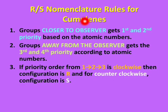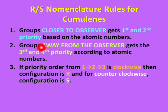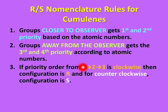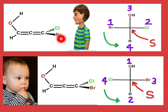Let us now understand the RS nomenclature rules for cumulenes. The first very important rule is that the groups closer to the observer should get the first and second priority, and the groups away from the observer should get the third and fourth priority, on the basis of atomic numbers. Then the third rule remains the same: on moving from 1 to 2 to 3, if the order is clockwise then the configuration is R, whereas if the order is counterclockwise then the configuration is S. Let us understand that by this example.